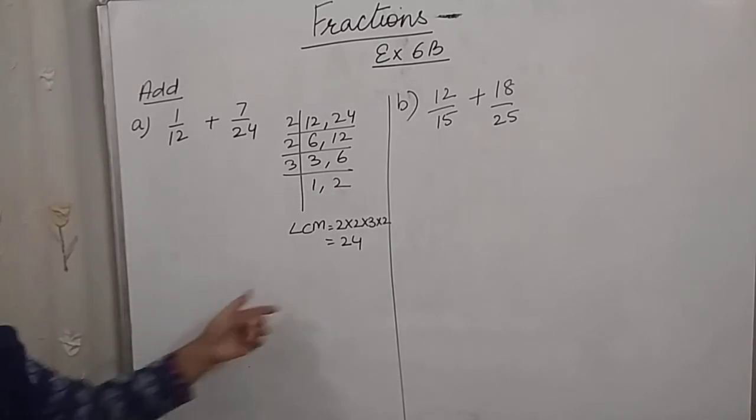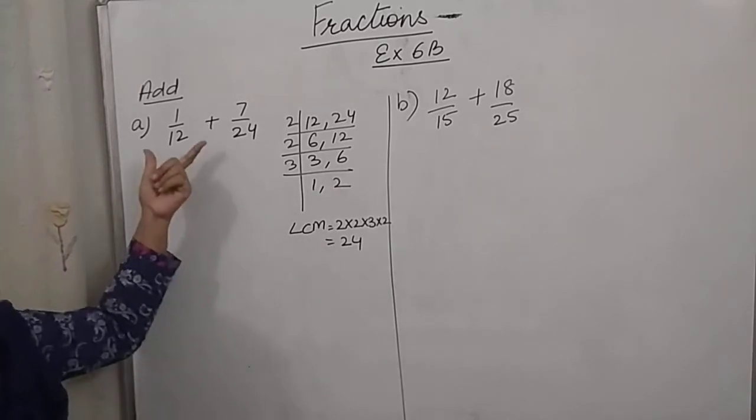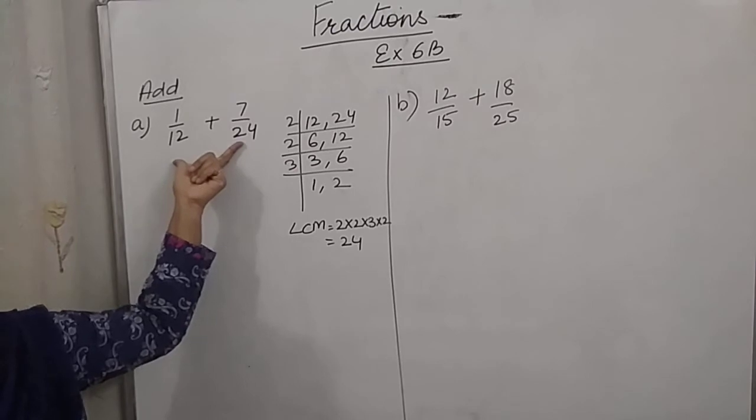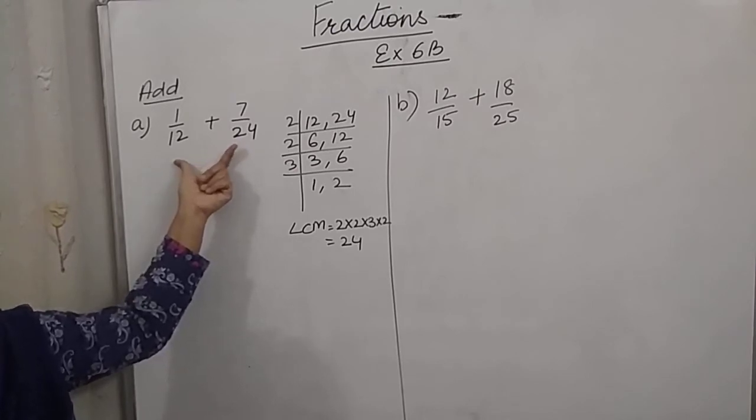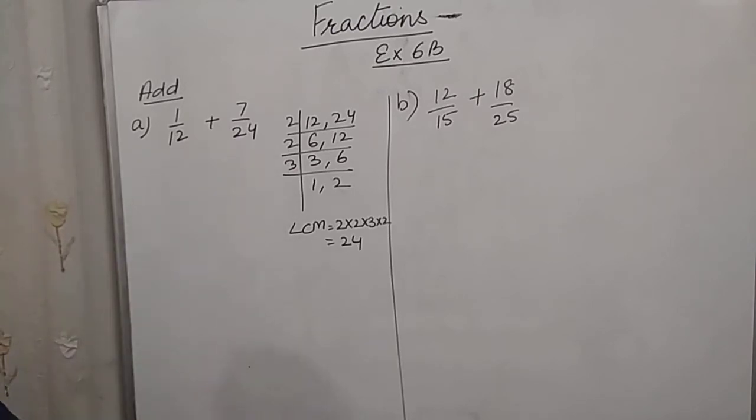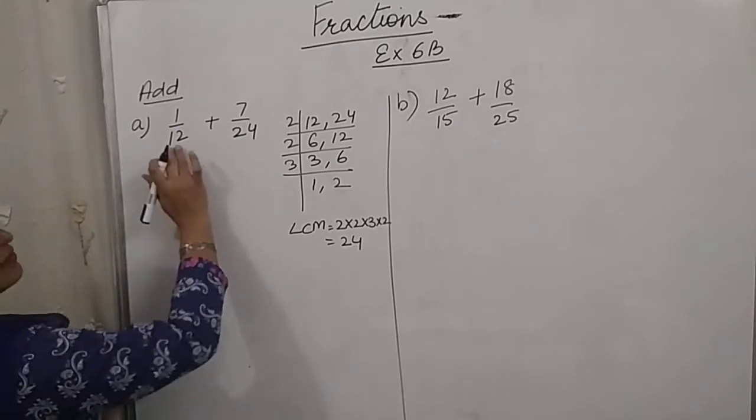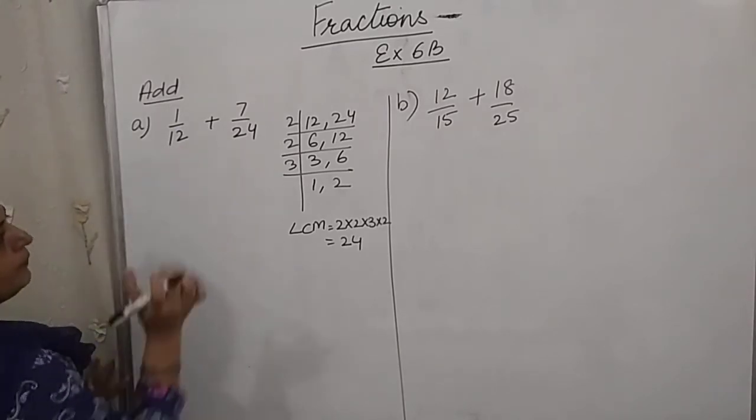So this was one of the properties also that LCM can be the greater multiple, the greater of the two numbers. And 24 is a multiple of 12.